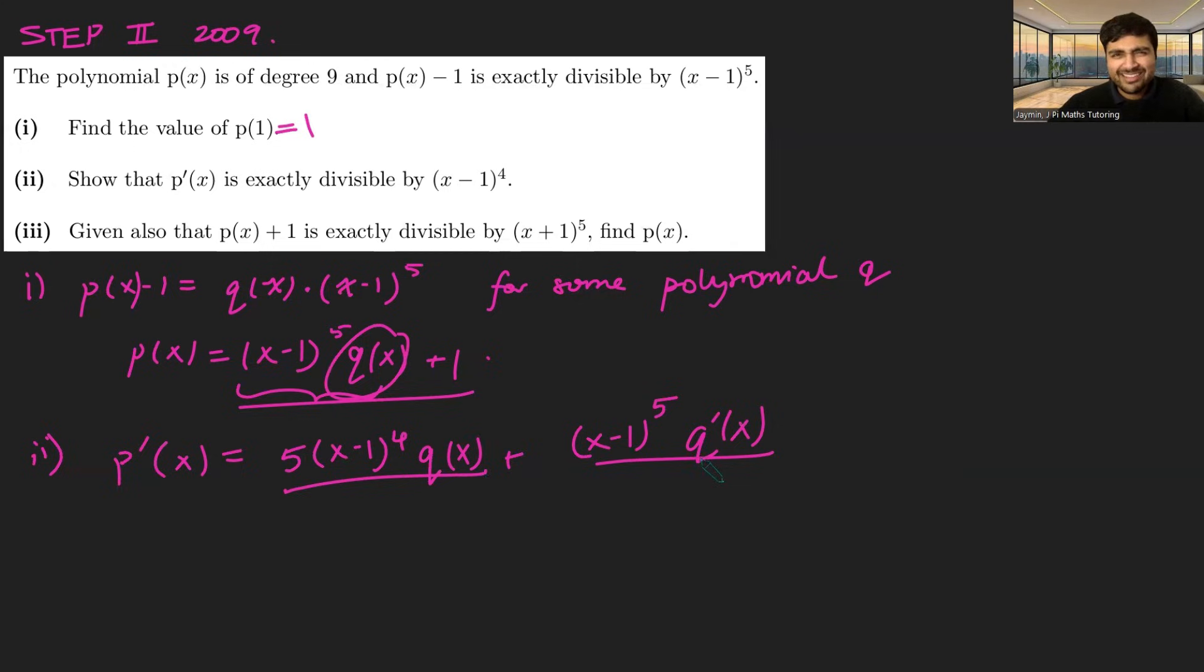Why is this in this paper, you may ask? This paper, remember, is designed for students who are looking to apply for Cambridge. In fact, for students who have already received their Cambridge offer. So this is to distinguish the good students from the excellent students. Why on earth are they getting you to do the product rule, something that you can do already in A-level maths? It's because it's going to be useful in part 3.